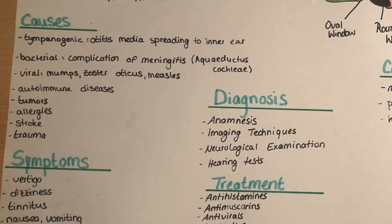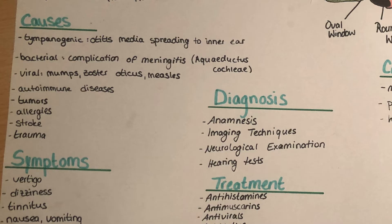There are different causes for labyrinthitis. There can be tympanogenic causes, meaning coming from the tympanic membrane — for example, otitis media which spreads into the inner ear. It can also be of bacterial origin as a complication of meningitis, and there are also viral causes such as the viruses causing measles, zoster oticus, and mumps.